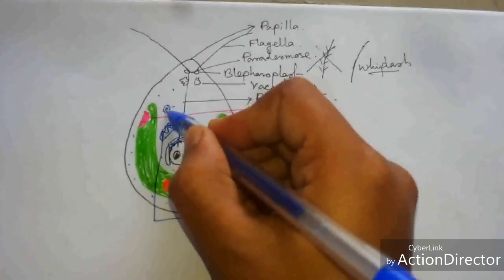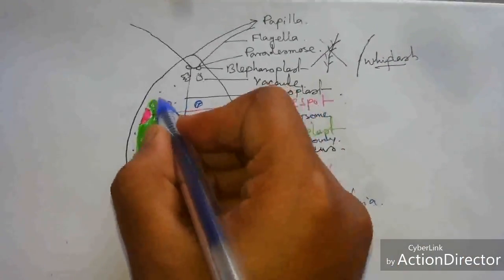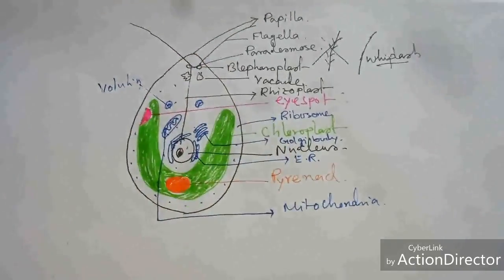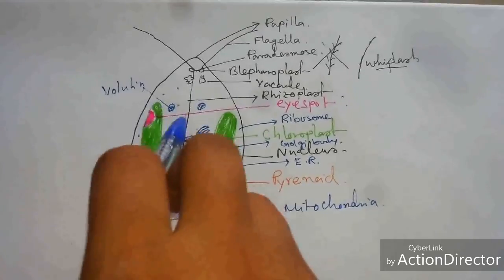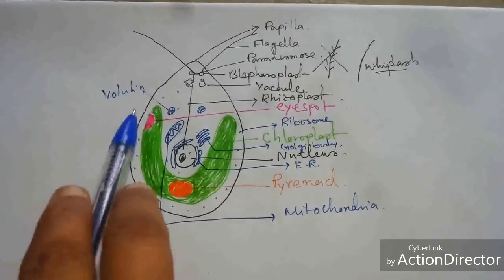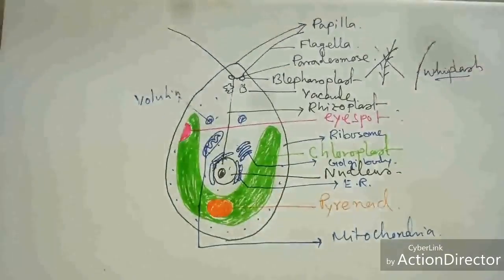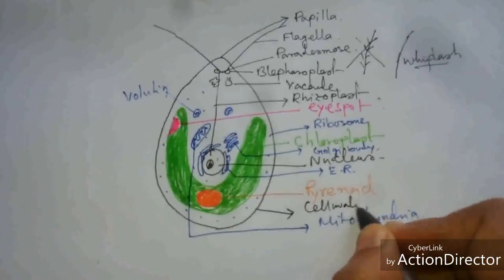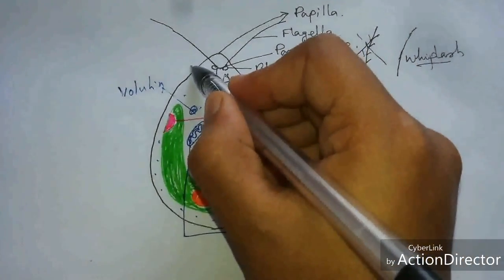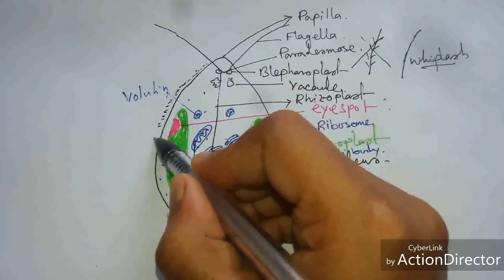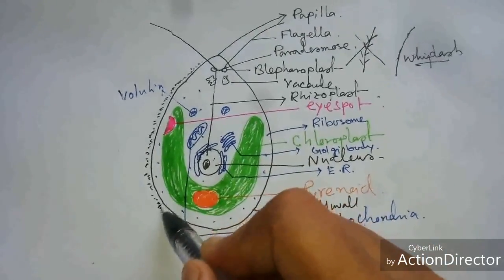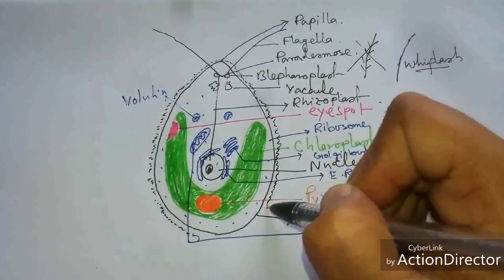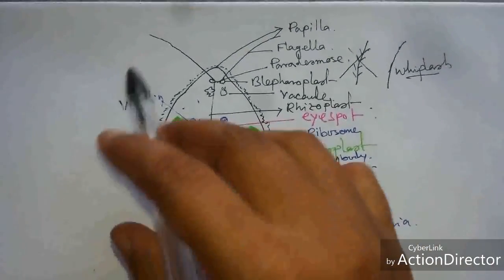Some special types of granules called volutine granules are also present. These are phosphosulphate granules — they contain phosphorous and sulfate — and are called volutine, which are present in Chlamydomonas algae. The outer portion is the cell wall, and on the outer layer mucilaginous sheaths are present.